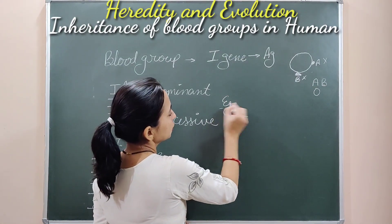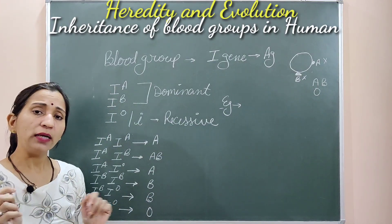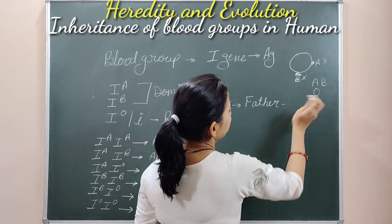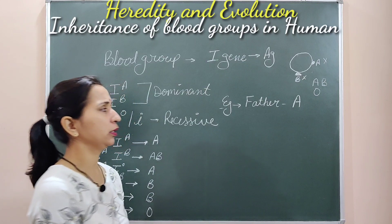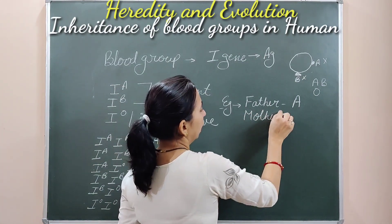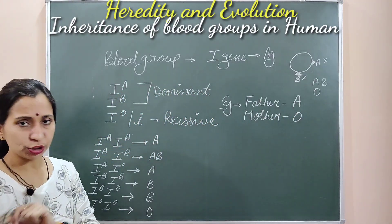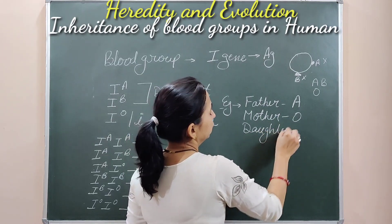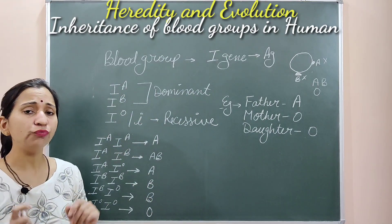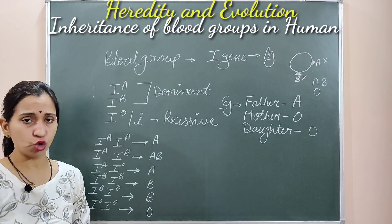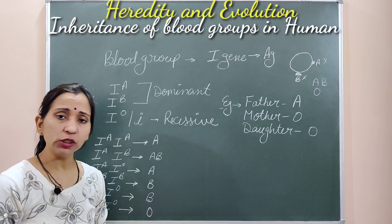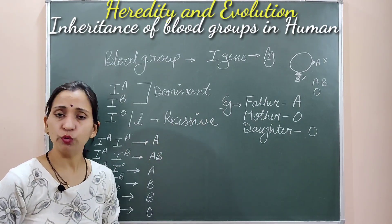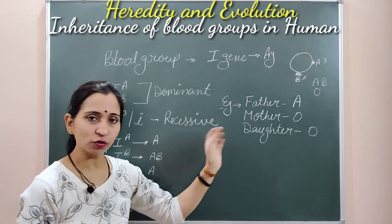The example we are going to discuss: suppose a father has the A blood group and the mother has the O blood group. Their daughter has the O blood group. We need to find the genotype of these parents. This type of question is asked in exams and requires a little practice to solve.